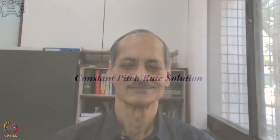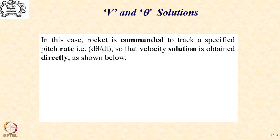The first one that we are going to consider in this lecture is a solution that we obtain through the assumption of pitch rate being constant. Let us see what are the features of such a solution and how we can obtain it. In this case, we assume the pitch rate to remain constant throughout the trajectory, so the rocket is commanded to track a specified pitch rate dθ/dt, so that the velocity solution is obtained directly as shown below.